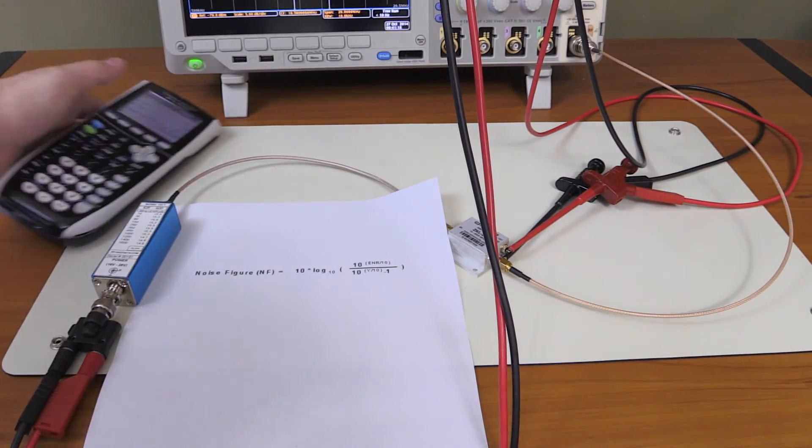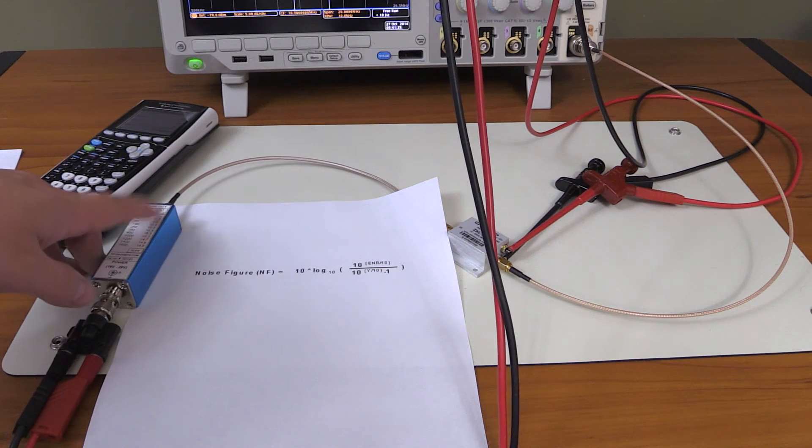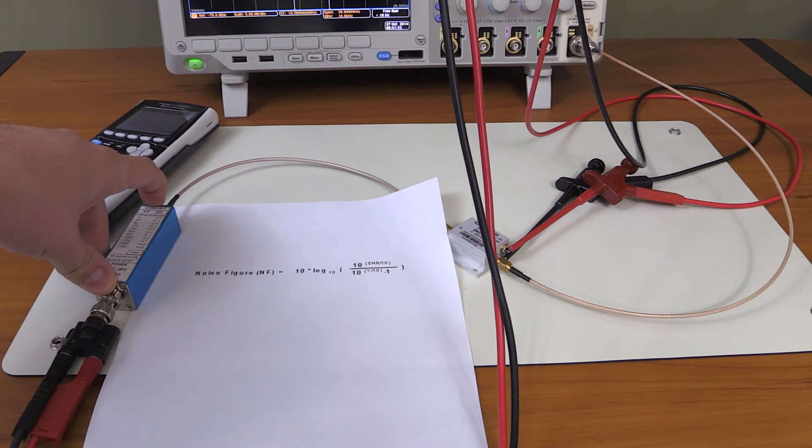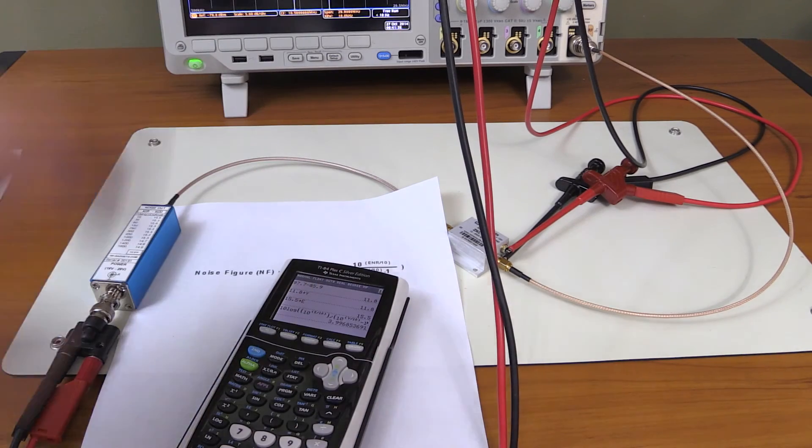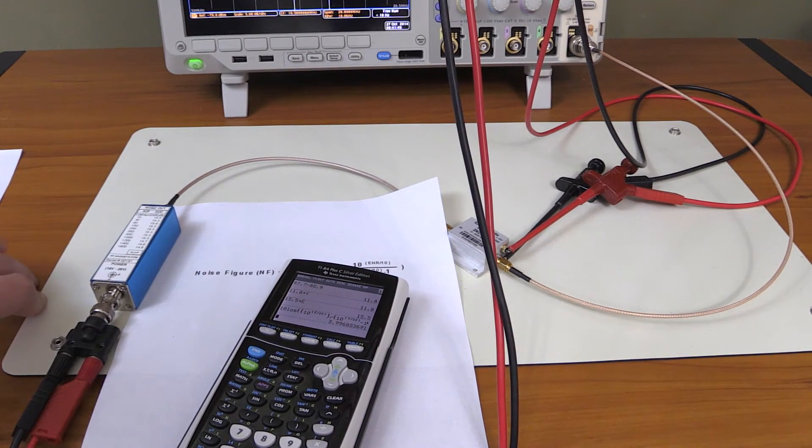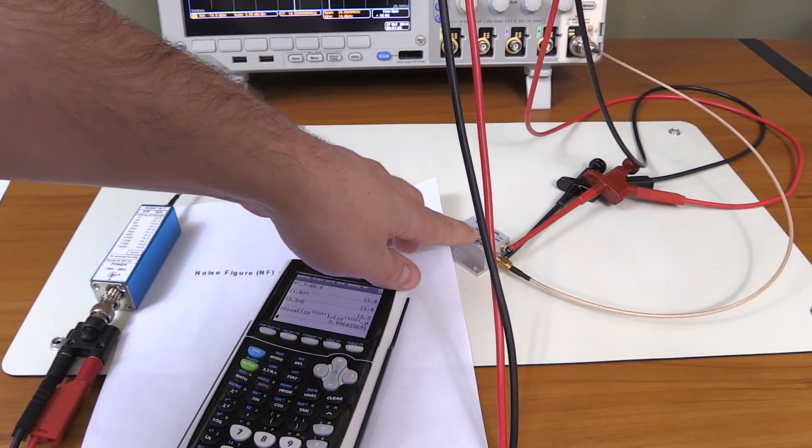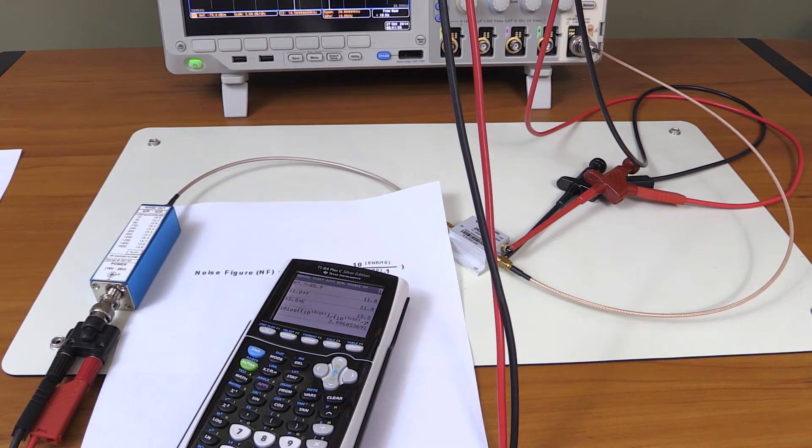If we hit enter, we are getting a noise figure of 3.996. Let's round that—that's rounded to 4 dB. This varies a little bit, actually quite a bit, from the noise figure we determined with the gain method, but this is a whole lot more accurate. Assuming that the ENR value provided by the manufacturer of this noise source is accurate, this method is more accurate than the gain method. So in this configuration with this test setup, we have determined the noise figure for this amplifier at 10 megahertz at the current room temperature to be 4 dB.